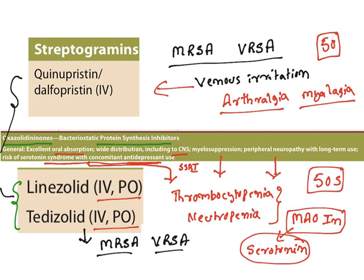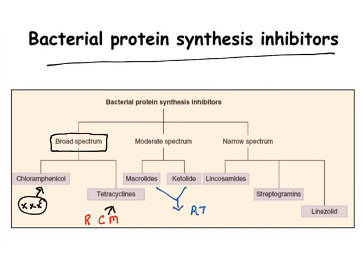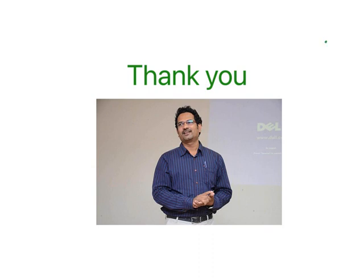This is a brief list about spectrum of activities. The broadest spectrum antibiotics are chloramphenicol and tetracycline, but chloramphenicol has multiple adverse effects and is reserved for only certain infections. Tetracyclines are used to treat rickettsial, chlamydial, and mycoplasma infections. Moderate spectrum: macrolides and ketolides, majorly used for respiratory tract infections. Narrow spectrum: lincosamides, streptogramins, and linezolid. Clindamycin is popularly used to treat malaria, Pneumocystis carinii, and toxoplasmosis, whereas streptogramins and linezolid are popularly used to treat MRSA and vancomycin-resistant Staphylococcus aureus. Thank you for watching this video. If you like the video, do subscribe.